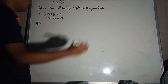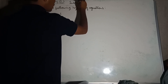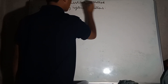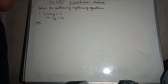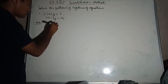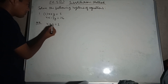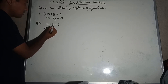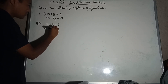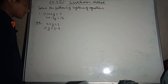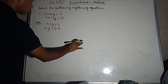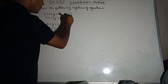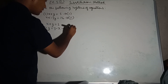This method is called the substitution method. From the first equation, y is equal to 3 minus x. We label this as equation 1, equation 2, and equation 3.